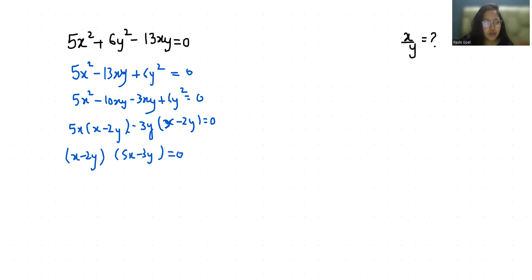So first x minus 2y equals 0. So x equals 2y and x/y equals 2/1.